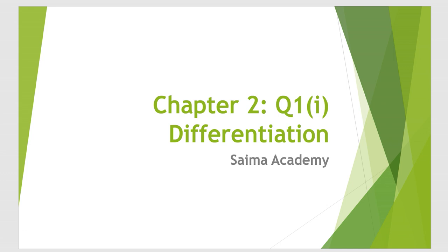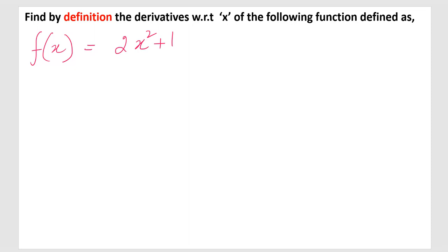In this lesson, we are going to start chapter number two, question number one, and we are going to solve the first part of question number one. The question requires us to find out the derivatives, but we have to use the definition method. By definition — I have written this in red because it is the important thing — we find the derivatives with respect to x. There will be four steps and we will solve this question step by step.